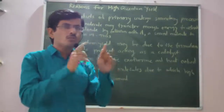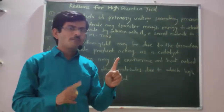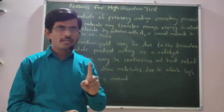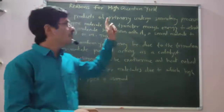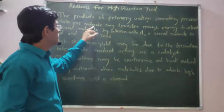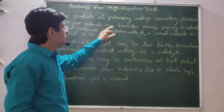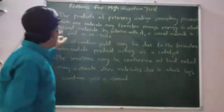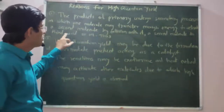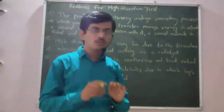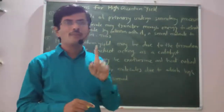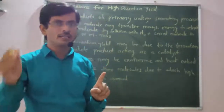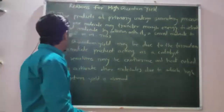Thus, according to the law of photochemical equivalence, one photon is absorbed and one molecule reacts — quantum yield is unity. This chain reaction mechanism is the first reason for high quantum yield.